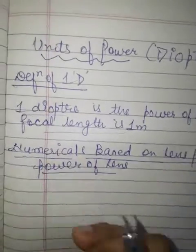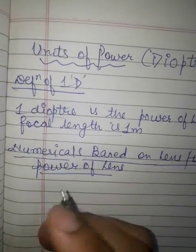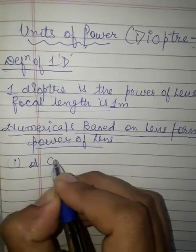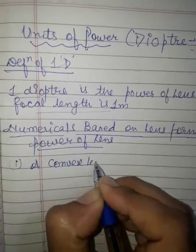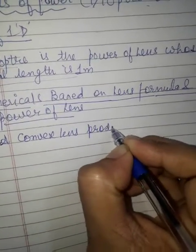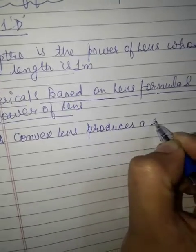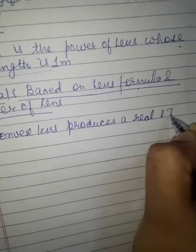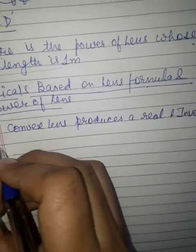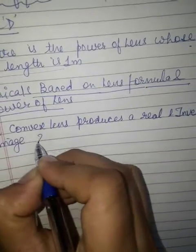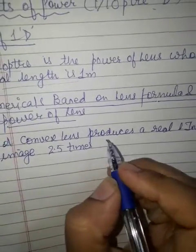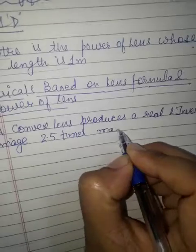Let's look at question number one: A convex lens forms a real and inverted image that is 2.5 times magnified.